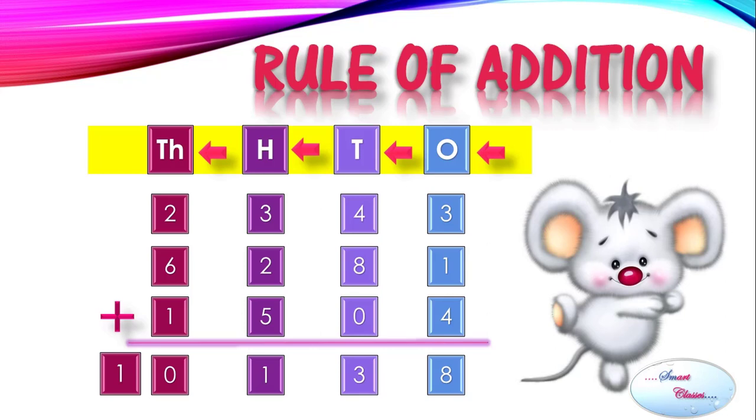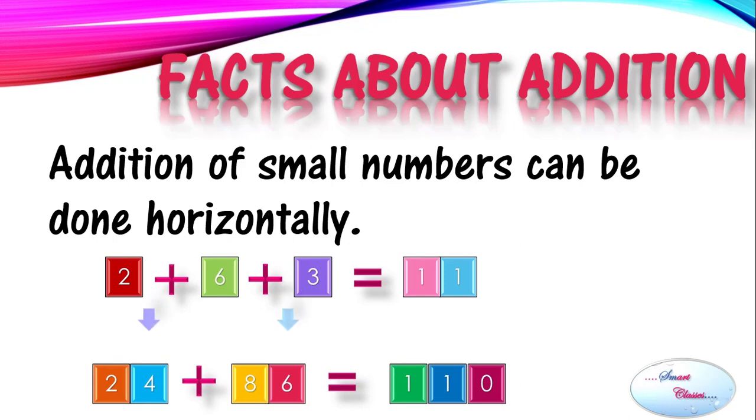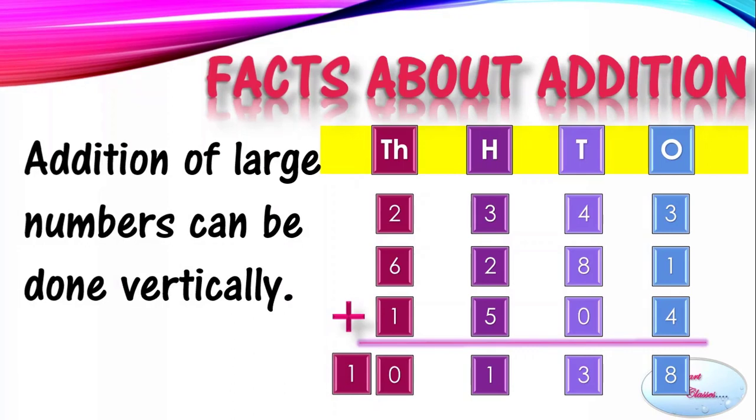Now let's see some facts about addition. The first one is that addition of small numbers can be done horizontally. First add ones, then take carry mentally on tens. Addition of large numbers can be done vertically, written under the place value chart to make it more convenient.